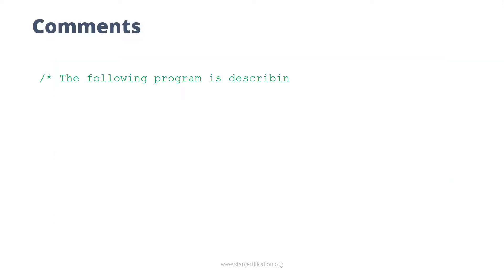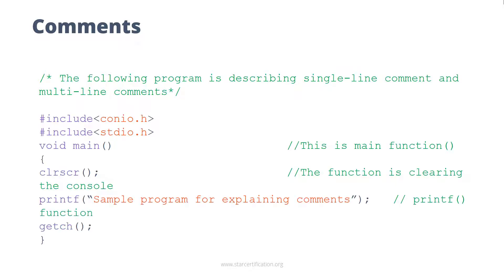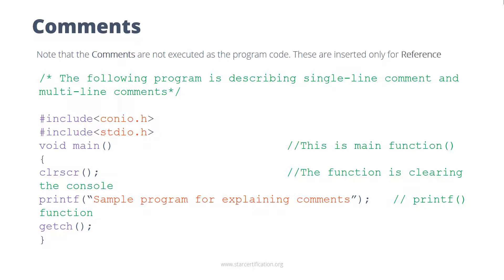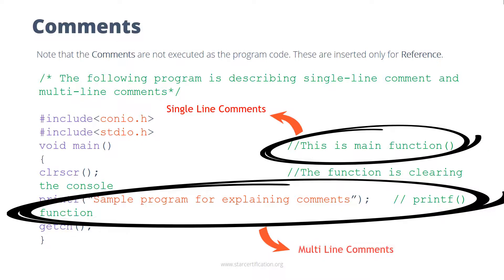While writing complex programs, it is a good practice to insert comments indicating the purpose of the program. This will help you to analyze your code at a later stage. You can add any number of comments in a program. Note that comments are not executed as program code — they are inserted only for reference. There are two types of comments: single line and multi-line. The syntax for each is shown on the screen.